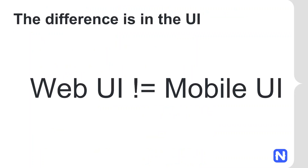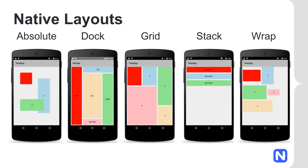The important difference is that web UI is not equal to mobile UI. NativeScript provides a variety of layout containers: absolute, dark, grid, stack, and more.